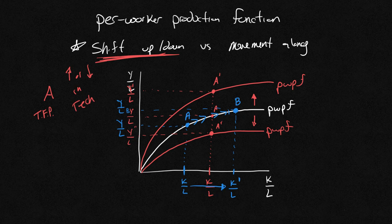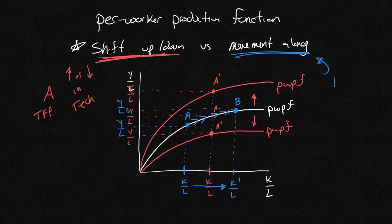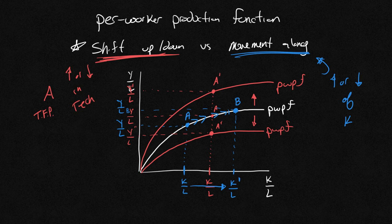So the movement along happens when there's an increase or decrease of capital or labor ratio. So that's a very quick and very brief explanation of the difference between a shift up and down versus a movement along the per worker production function.